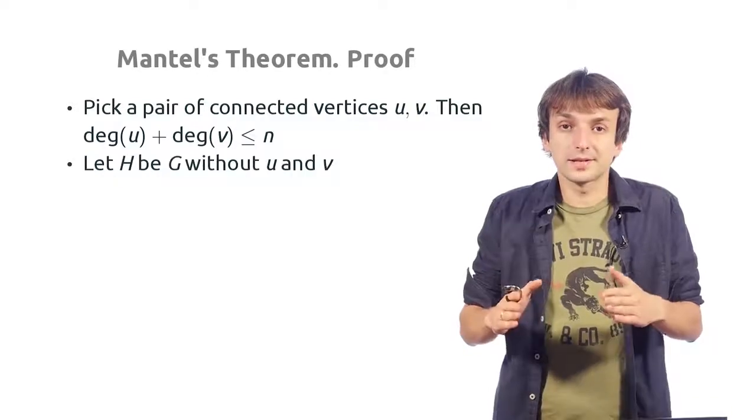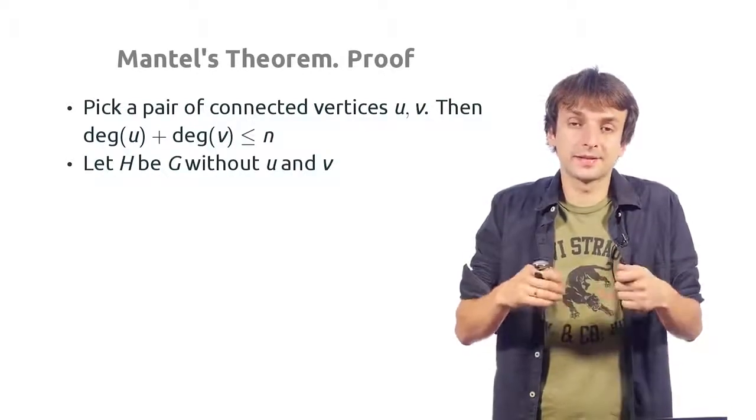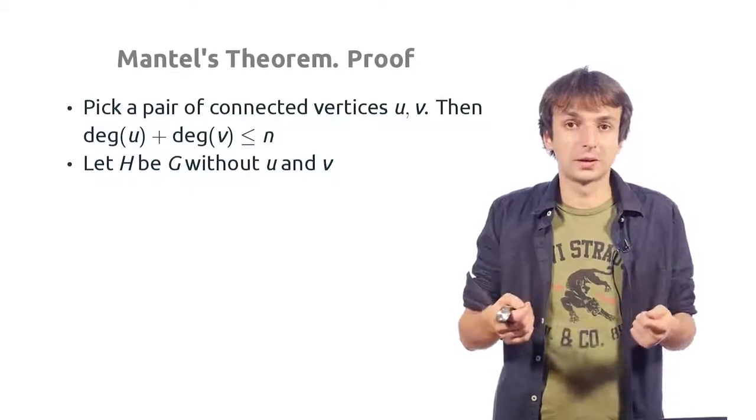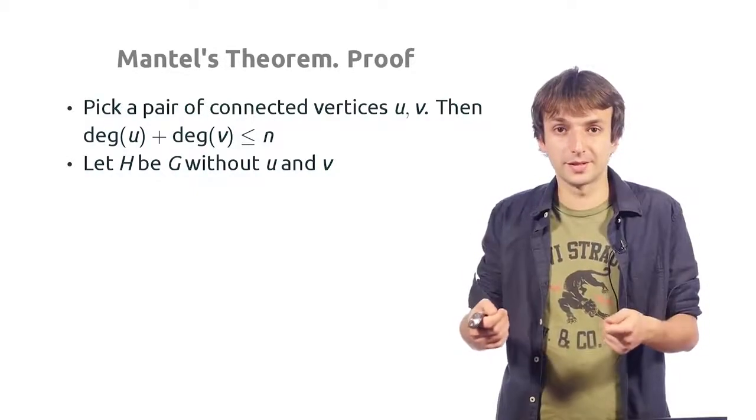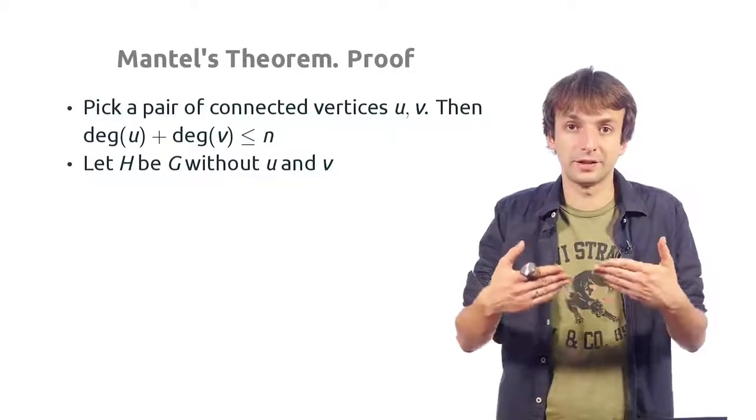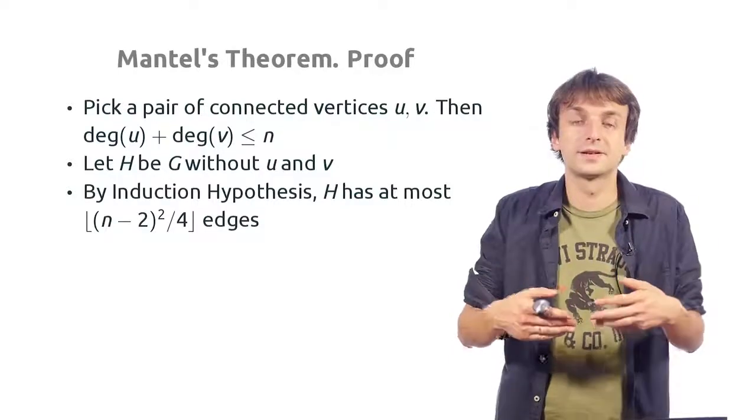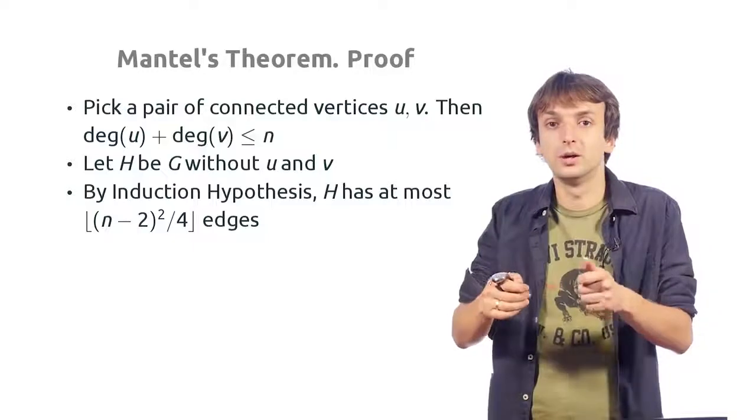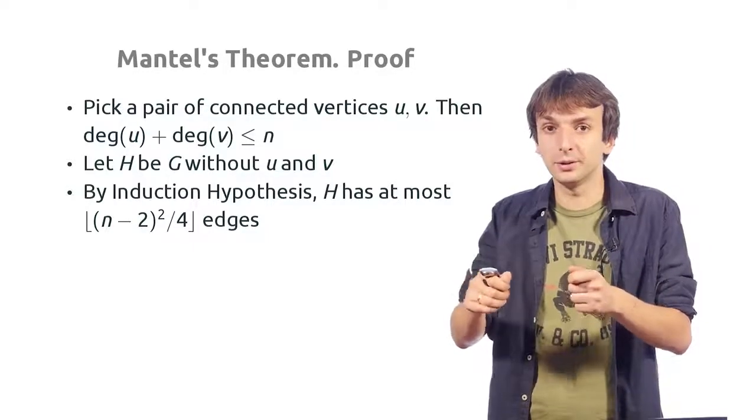Now, let us remove u and v from our graph. And let us denote the remaining graph by H. H now has only k minus 2 vertices. So, we can apply induction hypothesis to the graph H. So, by the induction hypothesis, the number of edges in the graph H is at most floor of n minus 2 squared over 4.